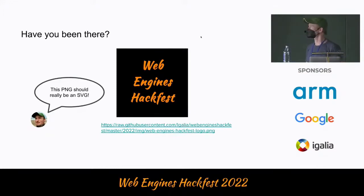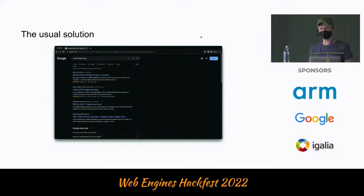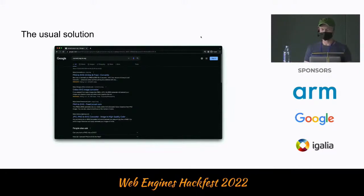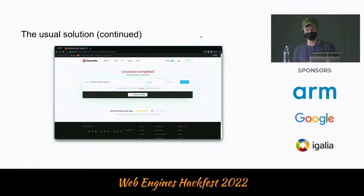This should actually be an SVG. And since this is text, it should probably be text in SVG, but let's assume for the sake of the example it was something graphical. So you think this should probably be an SVG — what do you do? The usual solution is you pick your search engine of choice, you type in something like "convert PNG to SVG", and pick the first or second or third result depending on how adventurous you are.